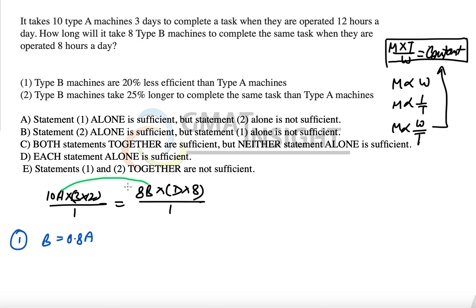So now the moment we have this kind of a relationship, we can simply answer the question. For example, we write 10A multiplied by 3 into 12 is equal to 8 multiplied by 0.8 times of A multiplied by 8 multiplied by D, and now we simply have to find out the value of D, the only unknown that we have is just D.